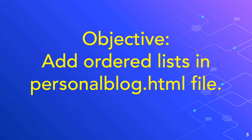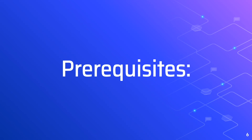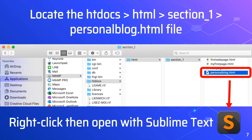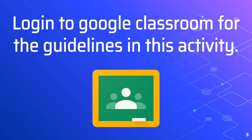In this video, we are going to add the ordered list to your personal blog page using the Sublime Text Editor. First you need to locate the personal blog.html file inside htdocs HTML section 1 folder. Then you need to right click and open with Sublime Text. The guidelines for ordered list is posted in Google Classroom, so please log in to your Google Classroom account for this particular activity.